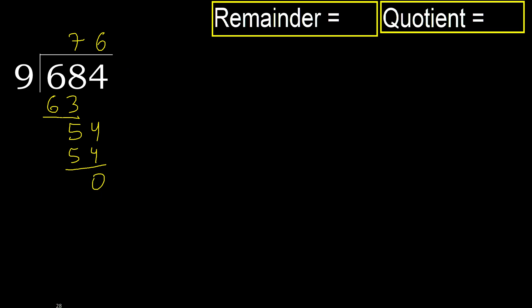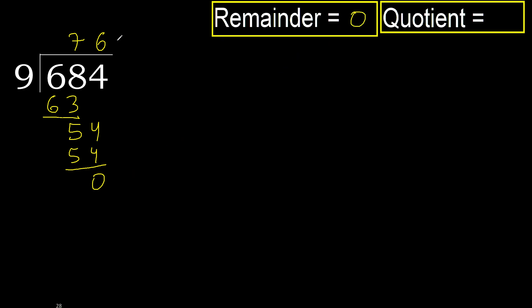That is not a number. Therefore, finish it. Ok. 0. Therefore, 684 divided by 9 is 76. Ok. Thank you.